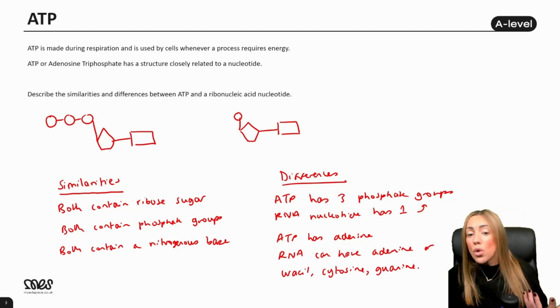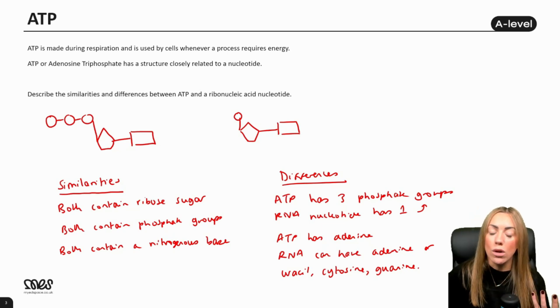They could also ask you for the differences between a molecule of ATP and a DNA nucleotide. A DNA nucleotide only has one phosphate group. A DNA nucleotide has deoxyribose sugar, whereas ATP has ribose sugar. With DNA, the bases can be adenine, thymine, guanine, or cytosine, whereas ATP is always adenine. Look out for those questions, they're quite straightforward as long as you know the structure of these molecules.